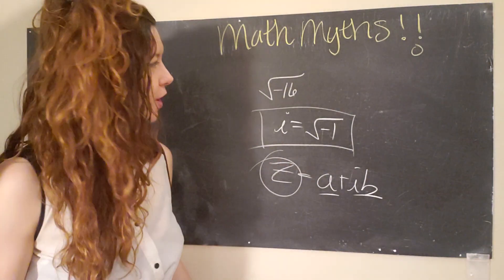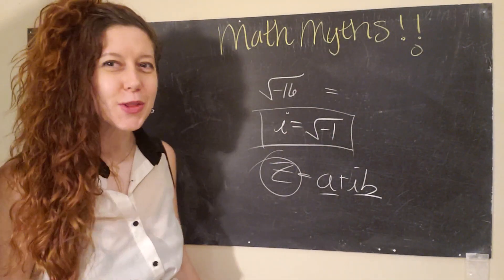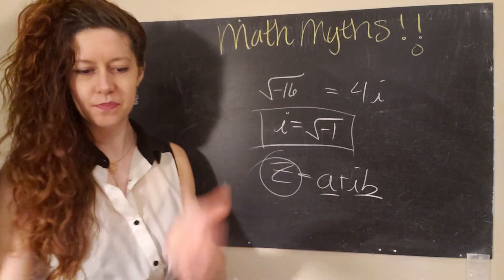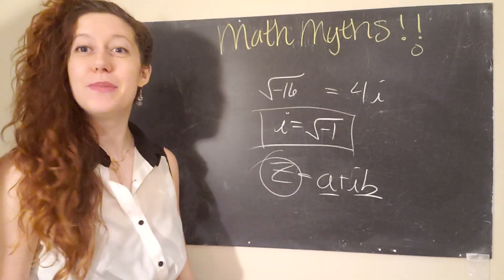And next time you're at a math test, you can be like, oh hey, I know the answer to square root of negative 16. It is just 4i. QED, as they say. Math myth busted.